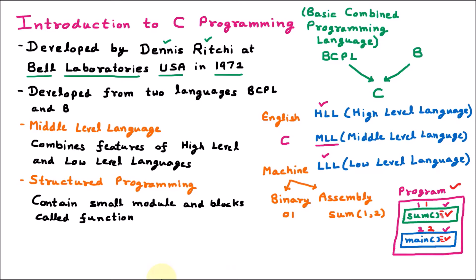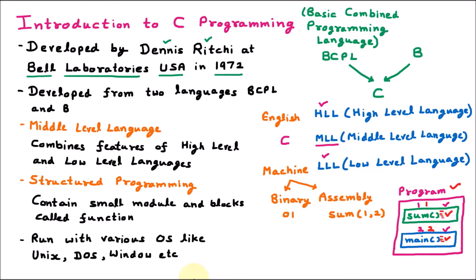C programming runs on various operating systems such as Windows, Unix, DOS, and many more. However, C is more close to the Unix operating system because C was first designed for Unix. Even the Unix operating system was written in C programming. But C can run on any operating system — DOS, Windows, Unix, or any other.